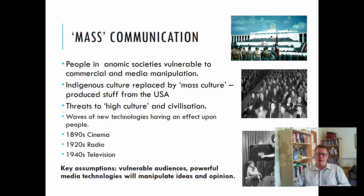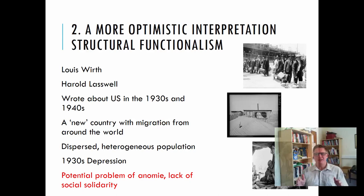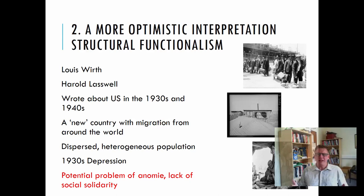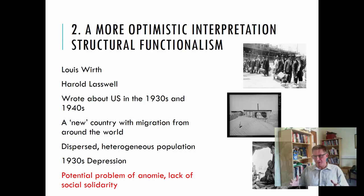Moving on to our second theory, this is a more optimistic interpretation of the mass media from a group of theorists called structural functionalists. We'll look at two figures here: Lewis Wirth and Harold Lasswell. They were both writing about the US in the 1930s and 1940s. At that time the US was a fairly new country — although it was founded in the 18th century, it was still being formed and developing. One of the main things about the US is that although there was an indigenous people — the Native American Indians — the vast majority of people living there were migrants from other cultures.